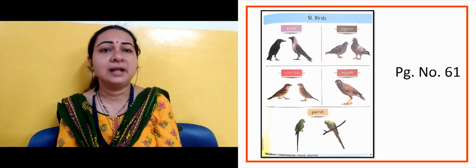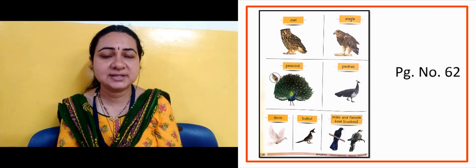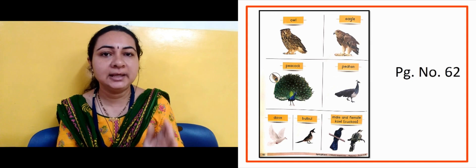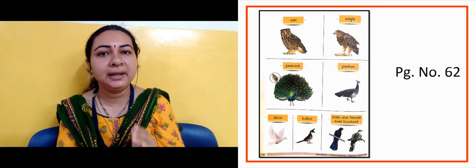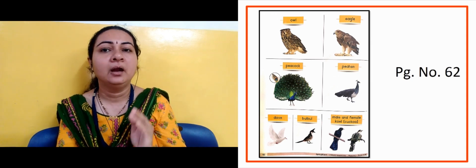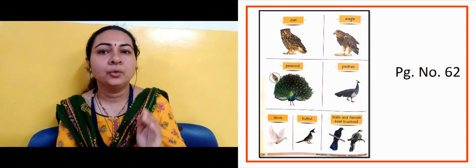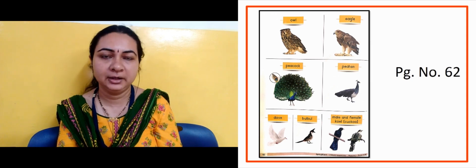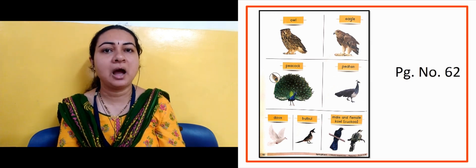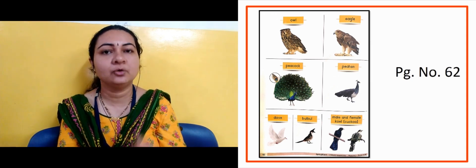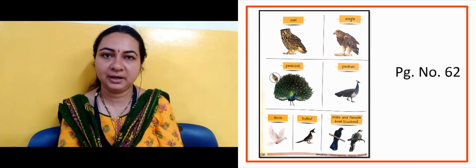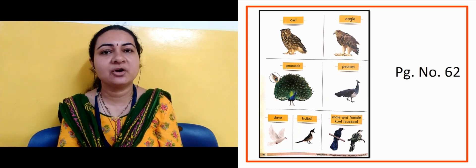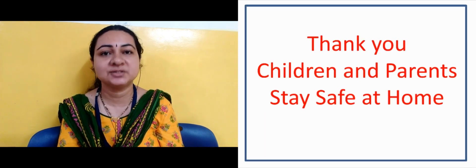Now the next slide is page number 62. On that: owl, eagle, peacock, peahen, dove, bulbul and koyal. Revise all of these from book number 3. So thank you so much my dear children and parents.